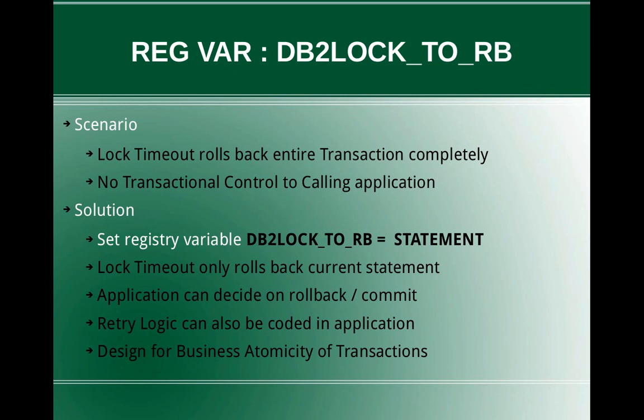You have to be cautious when using this variable, because you have to design for the business atomicity of transactions. For example, as part of a transaction, three updates are happening — all three updates should be committed or all three should be rolled back. That is business atomicity. When you set this variable, you are actually updating only two tables, and the third update statement which failed is alone rolled back, and you can still commit the changes. So you have to be careful when designing the application for the business atomicity of the transactions.